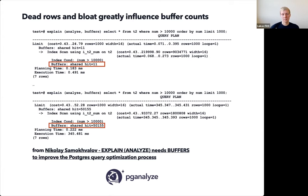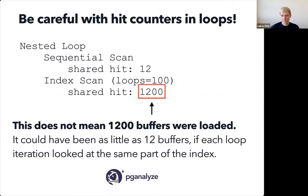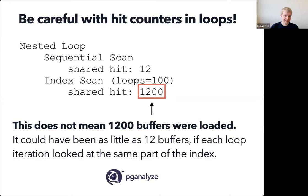One thing to mention when using the buffers option in EXPLAIN ANALYZE: be careful when looking at hit counts. With nested loops, for example, you have a sequential scan and an index scan being looped over 100 times. The shared hit counter might say 1200, but this does not mean you actually loaded 1200 distinct buffers. The shared hit counter counts each access — even if you're accessing the same portion of the index again, it increments even though the page is already in memory. This counts total hits, not distinct hits. Be careful about this when looking at nested loops.